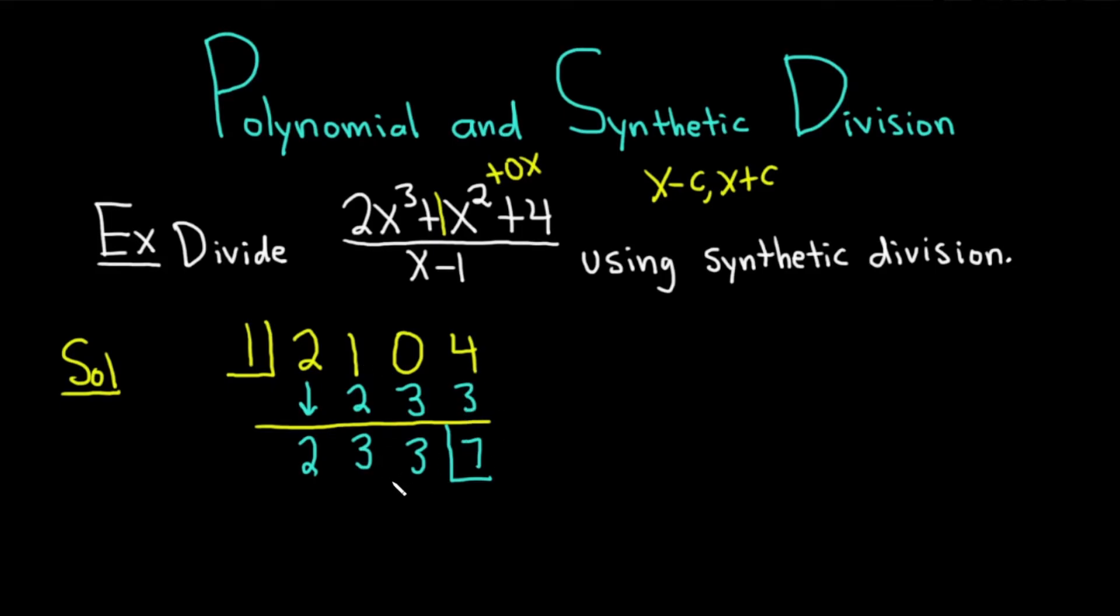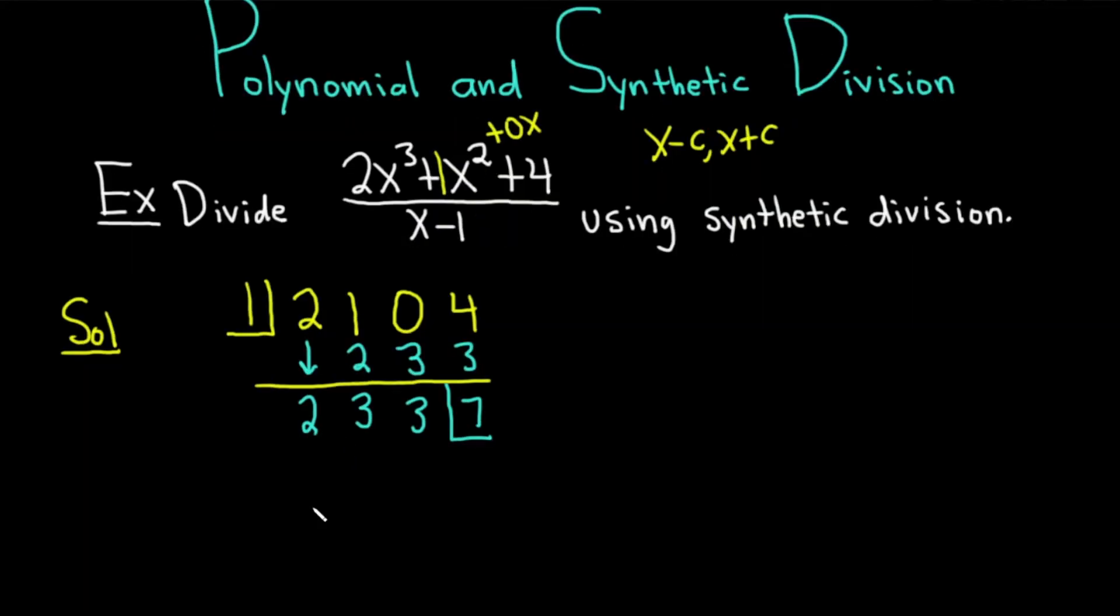So now what you do is you write your answer down. Basically you look at these coefficients. Because this is degree 3, it's cubic, you start at 1 less. So you're going to start at 2. So it'll be 2x². This 2 is from the 3, it's 1 less. Then you just go down in order: 3x + 3. See how the powers are decreasing?